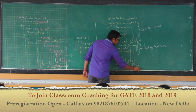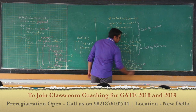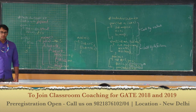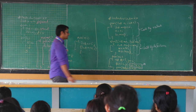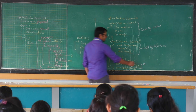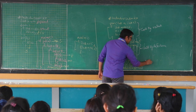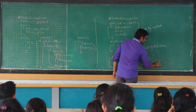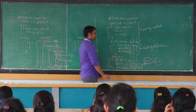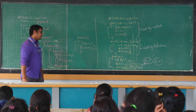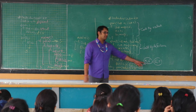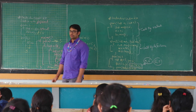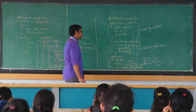Now, in this first printf statement, what will be printed? How many of you are saying that it is going to print 5, 6 and how many of you are saying it is going to print 6 and 5? Those who are saying 5, 6, raise your hands. Those who are saying 6, 5?